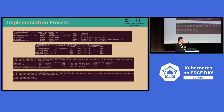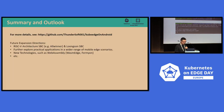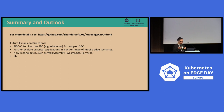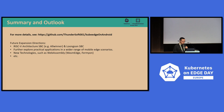Now we have deployed KubeEdge to Android OS and can manage Android OS devices from the cloud. For the summary and outlook in future, for more details you can see the documents in the repository. In the future, we will also explore how to run KubeEdge or container runtimes on RISC-V architecture, exploit a wider range of mobile edge scenarios, and explore how to run new technologies such as WebAssembly on edge nodes.